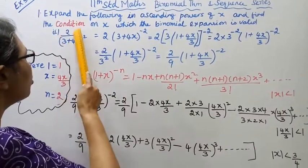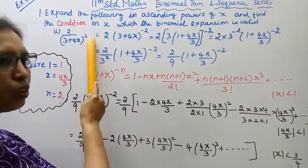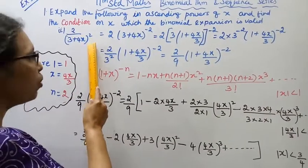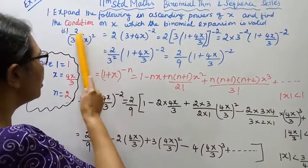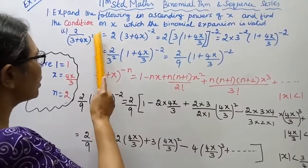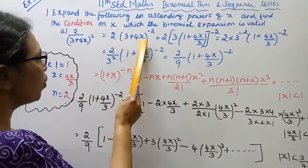The expression is (2/(3+4x)) the whole square — that is, (3+4x) the whole square in the denominator, power minus 2.